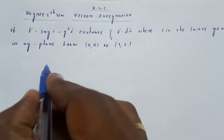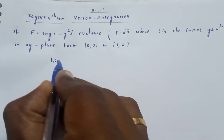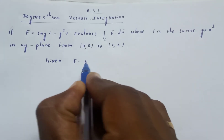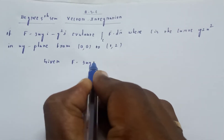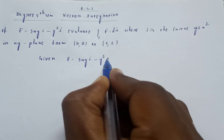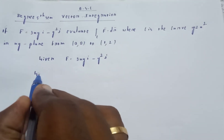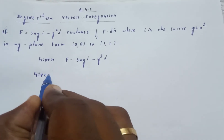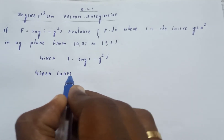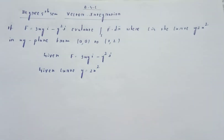First, the given data: F is equal to 3xy i minus y square j, and the curve c is given as y is equal to 2x square.